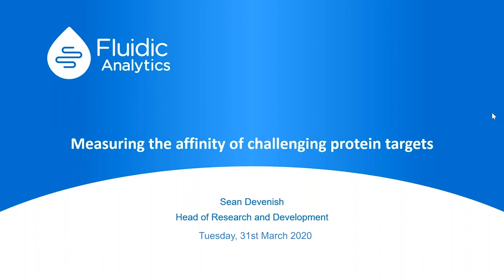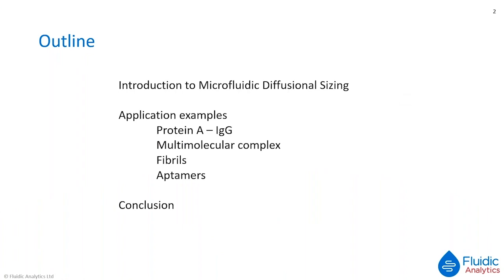We won't take questions as I'm going through the slides, but will deal with them all at the end. Here's a quick outline of what I'll cover today: I'll start by introducing microfluidic diffusional sizing, explain how it works and its advantages over other techniques. The bulk of the presentation will look at particular application examples, focusing on selective targets — specifically protein A / IgG interaction — multi-molecular complexes, fibrils, and aptamers. Then we'll wrap up and hopefully have time for questions.